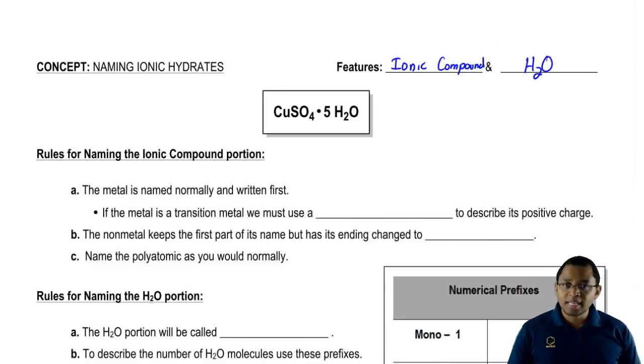Right here we have a good example of an ionic hydrate. We have CuSO4 and then that little dot there means that those five water molecules are actually surrounding my ionic compound. What that really means is that I had my ionic compound and I decided to dunk it into water. Surrounding it are these five water molecules.